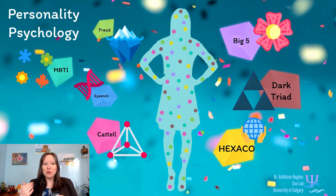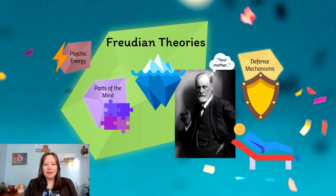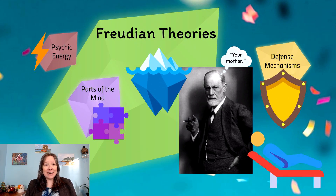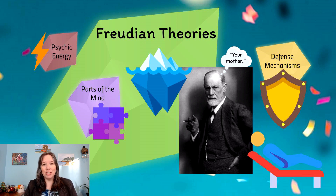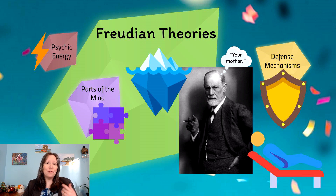We're going to jump way back to the theory of personality as proposed by Sigmund Freud. You're probably familiar with Freud from Unit 5, covering his areas of consciousness — conscious, pre-conscious, and unconscious — and from Unit 9 on psychosexual development. In this unit we'll cover three new theories of Freud's: psychic energy, the parts of the mind, and defense mechanisms.